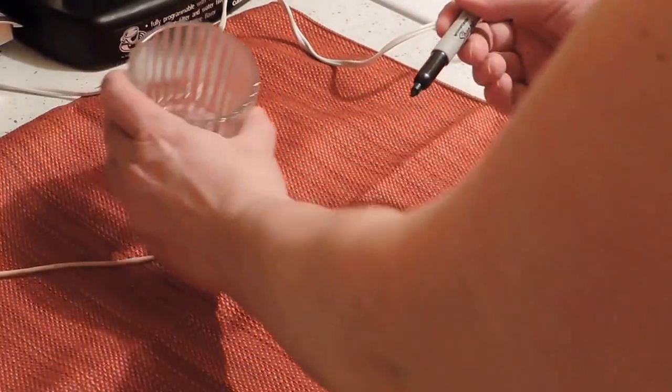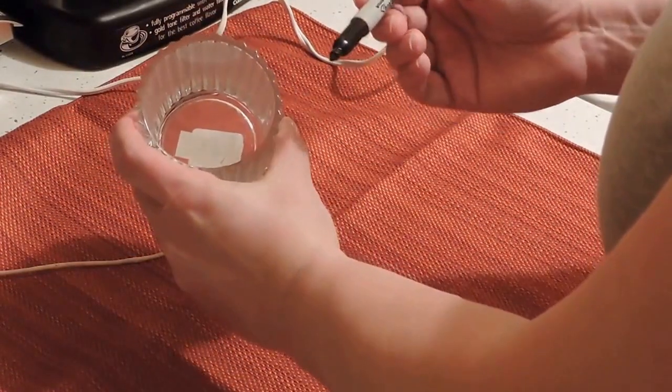Using a sharpie or other soft tip marker, make a dot in the center of the bottom of the jar.